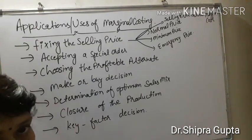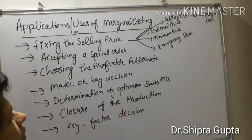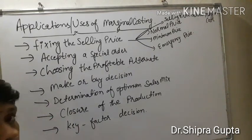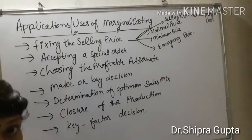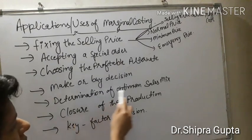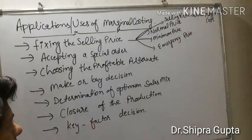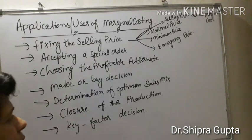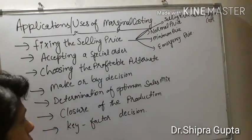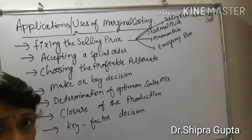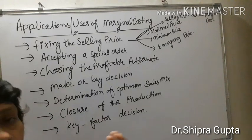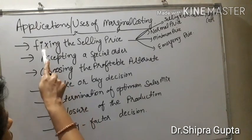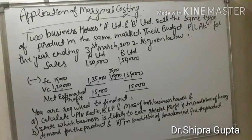Choosing the profitable alternative: if there are two or three alternatives, we decide which is beneficial for us. Make or buy decision: whether we should make the component or buy from outside. Determination of optimum sales mix: what is our optimum sales mix. Closure of production: which unit should be closed first. Key factor decision: we first decide what is our key factor and calculate accordingly.